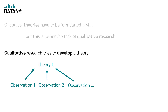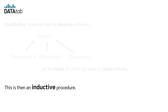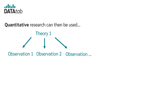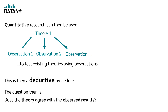Qualitative research tries to develop a theory on the basis of collected data or observations — this is an inductive procedure, where observed patterns in reality are generalized. Quantitative research can then be used to test existing theories using observations — this is a deductive procedure. The question then is: does the theory agree with the observed results?